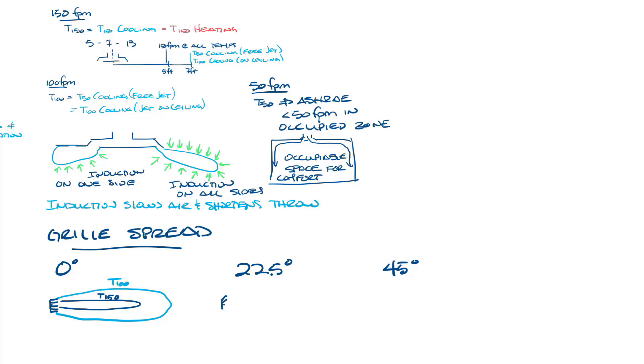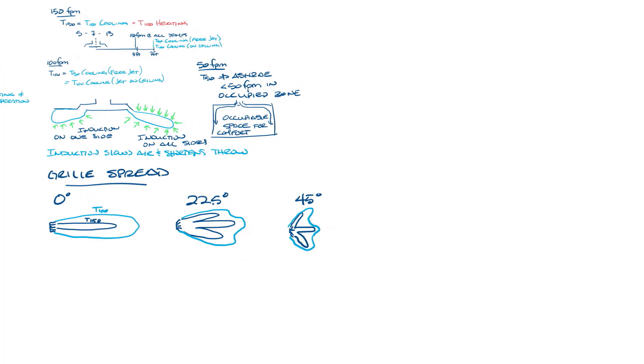As you start spreading the throw, you get kind of three separate little jets of T150 and T100 surrounds that. And then at 45 degrees, it's even shorter and wider. So as the spread goes up, the throw is shortened. This is because at 22.5 and 45 degrees, there's more induction into the jet, so you have shorter throws.